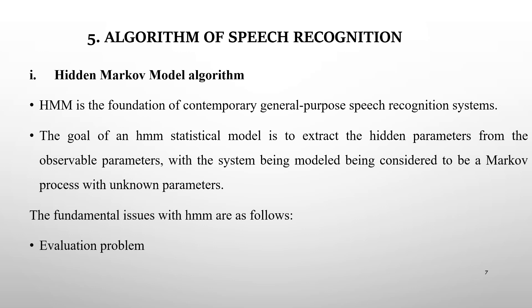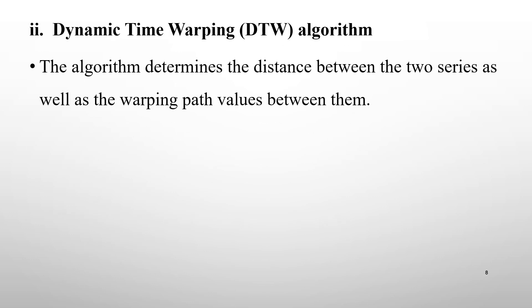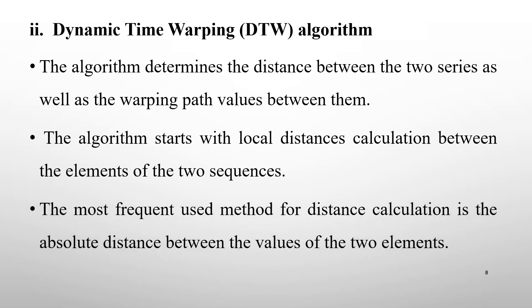The fundamental issues with HMM are as follows. The evaluation problem: given an observation sequence and a model, determine the likelihood that the observed sequence was created by the model. The dynamic time warping algorithm determines an ideal warping path between two time series, calculating the distance between the two series as well as the warping path values. The algorithm starts with local distance calculations between elements of the two sequences, with the absolute distance being the most frequently used method.